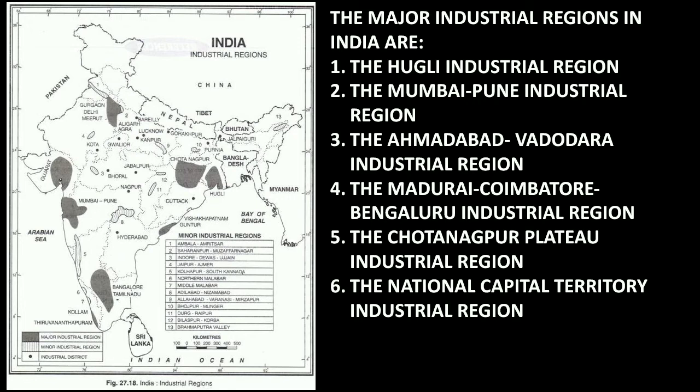Some industrial units in India are also shown on this map — you can check it in your textbook as well. The major industrial regions in India are: the Hooghly industrial region, the Mumbai-Pune industrial region, the Ahmedabad-Baroda industrial region, the Madurai-Coimbatore-Bengaluru industrial region, the Chota Nagpur Plateau industrial region, and the National Capital Territory industrial region. The dark-shaded areas on the map indicate where industries are found in India.